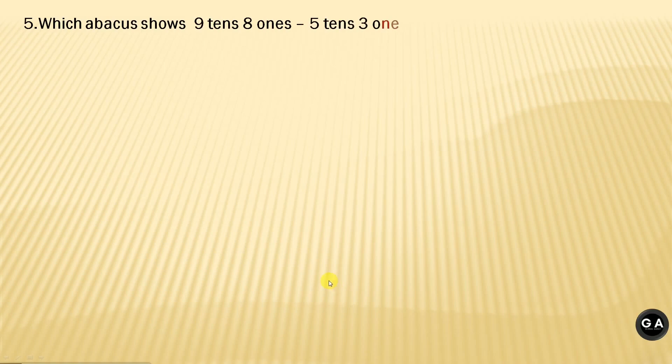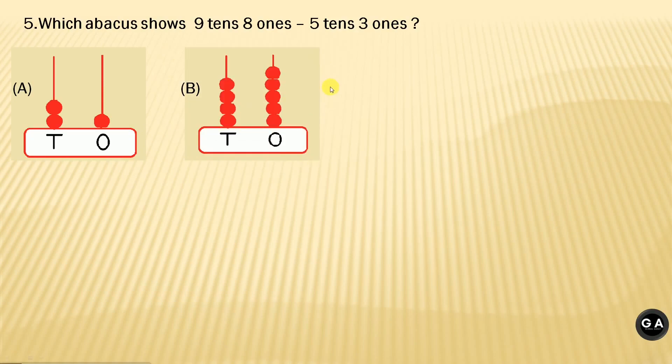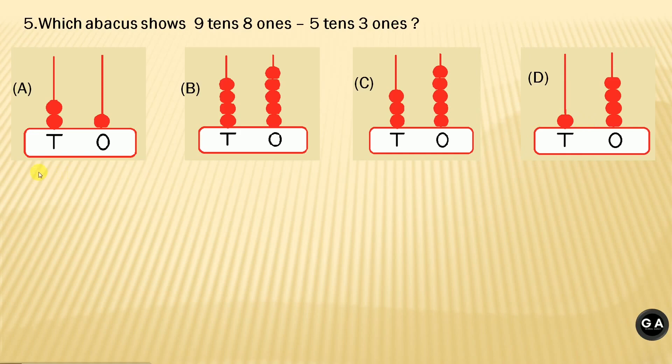Now, the next question is an all-time favorite based on abacus. Question number 5. Which abacus shows 9 tens 8 ones minus 5 tens 3 ones? Options A, B, C, and D are shown. Let's check the options.